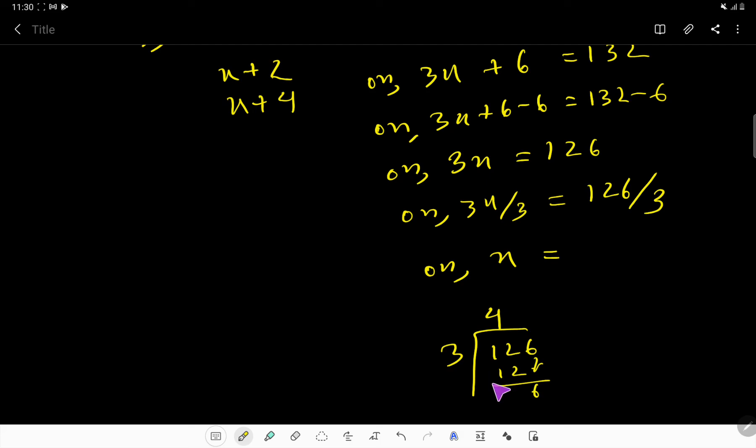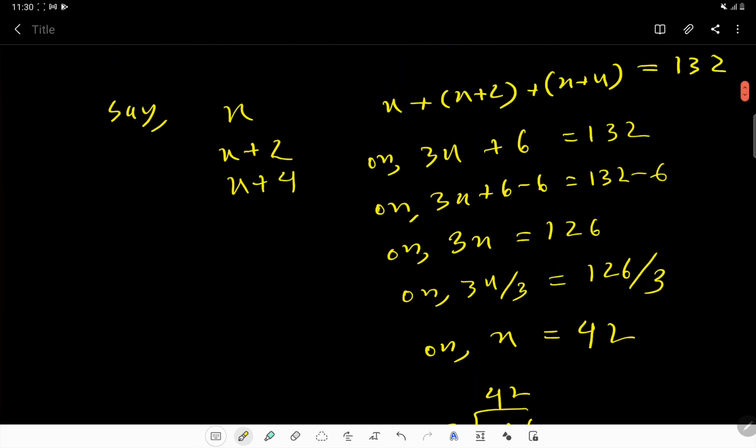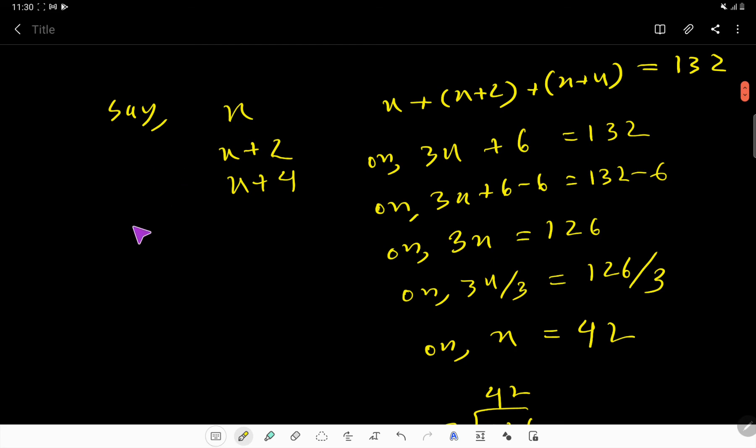That is our first number. That is here, first number will be 42. Then x plus 2, that is 42 plus 2, that will give us 44. Then 42 plus 4, that is 46. So these are the consecutive even numbers.